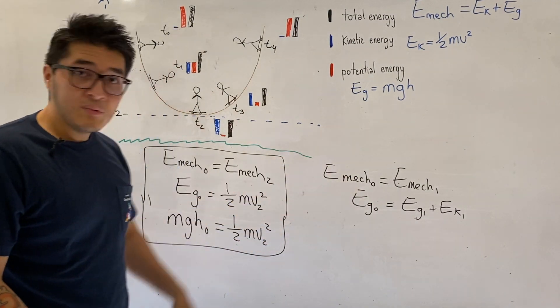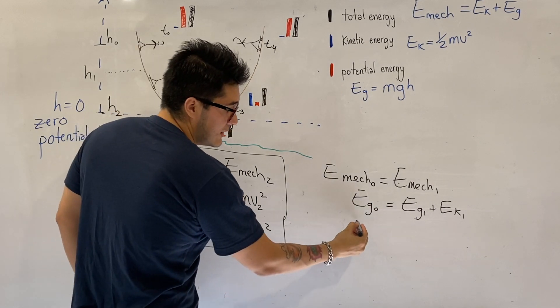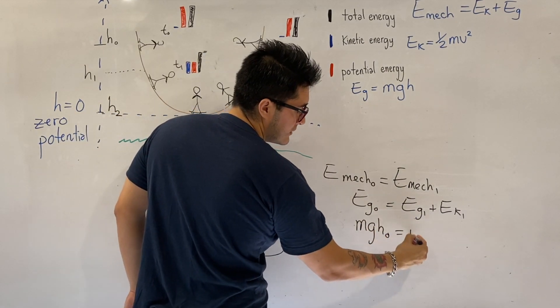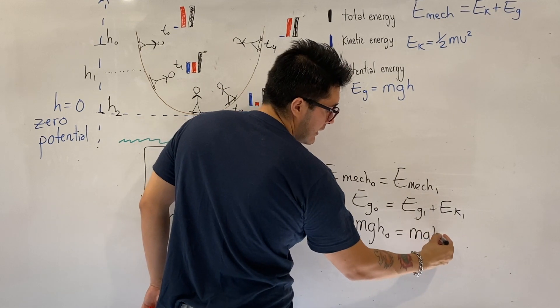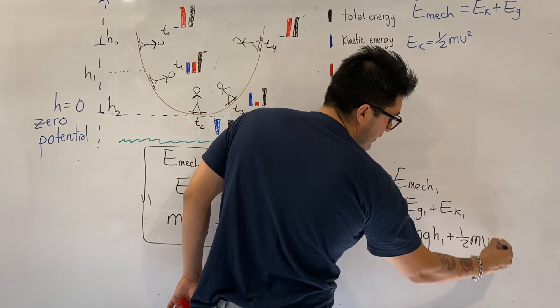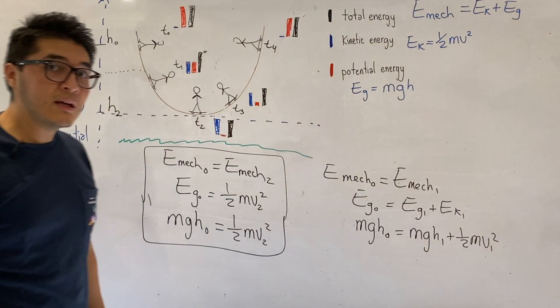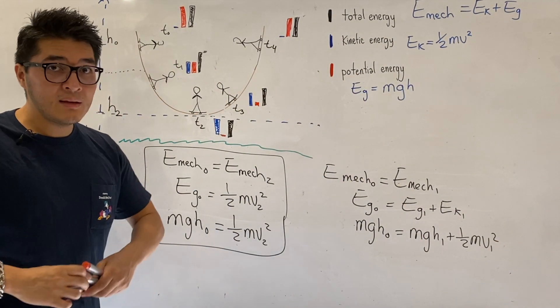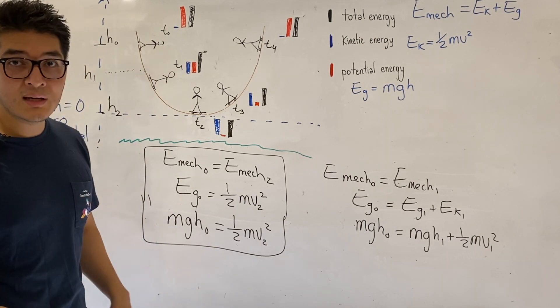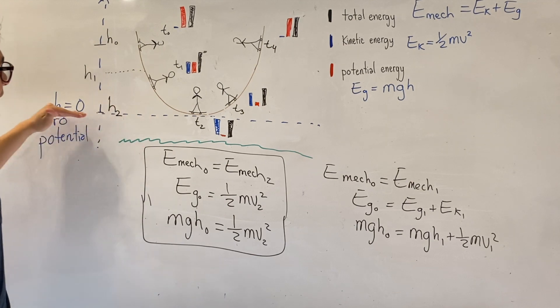Well, we can simplify this into the equation. So this would be MGH initial equals to MGH1 plus a half MV1 squared. And notice how we got a completely different equation. So that's what I meant. There is no equation. Because it depends on which point you're considering, the skater, and also your coordinate system.